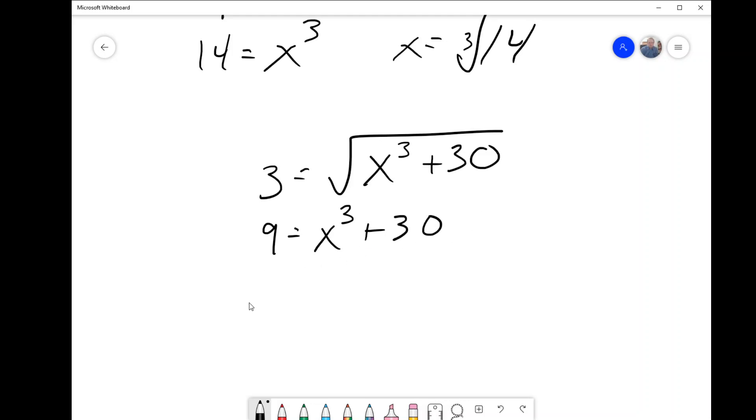We bring this 30 to the other side. We get negative 21 equals x cubed. X equals the cube root of negative 21.